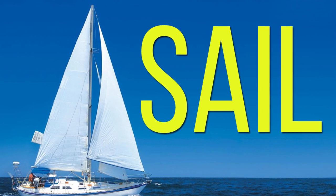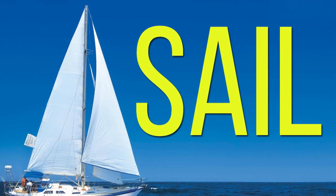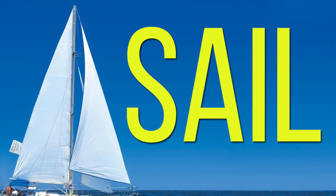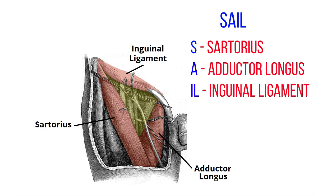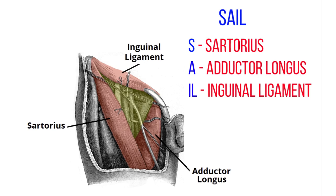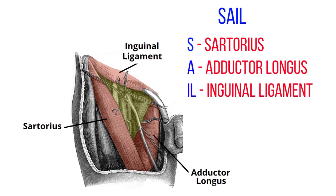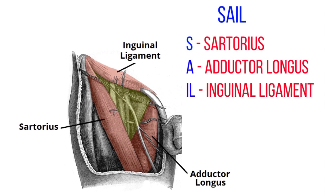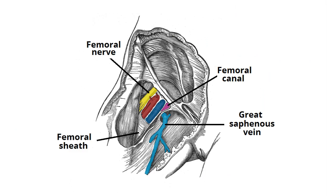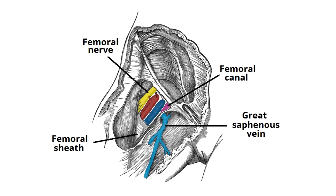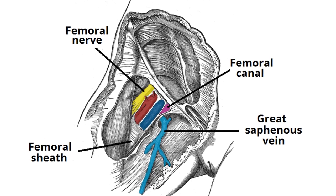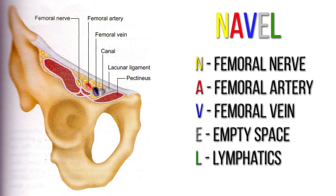A fantastic way of remembering the borders of the femoral triangle is by using the acronym SAIL, since it's shaped like a sail. S stands for sartorius, A for adductor longus, and IL for inguinal ligament.